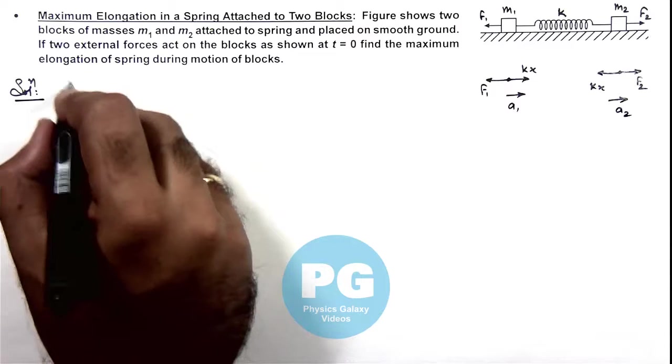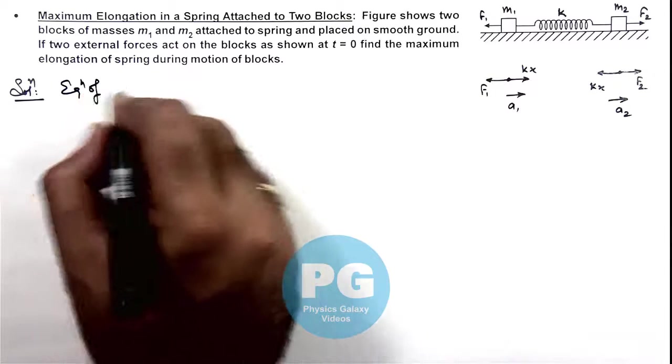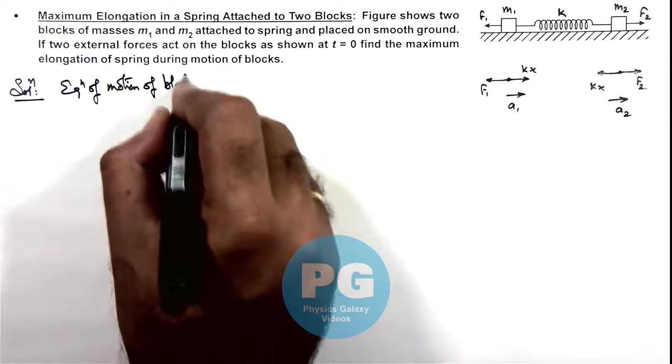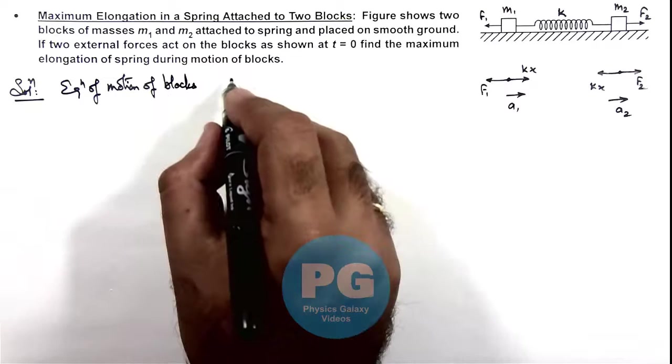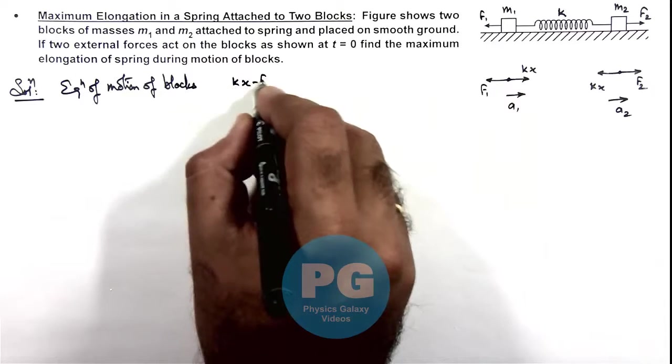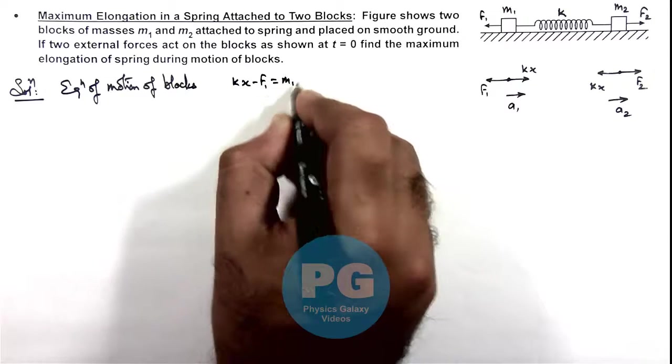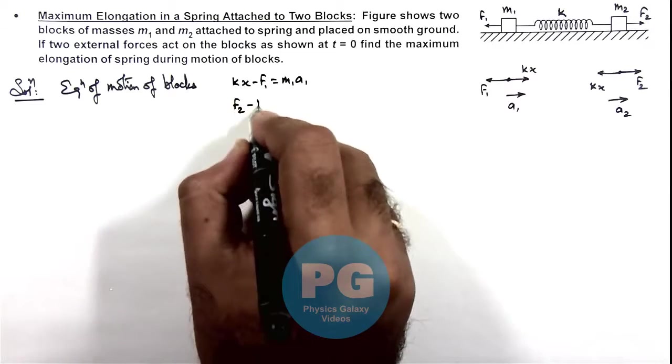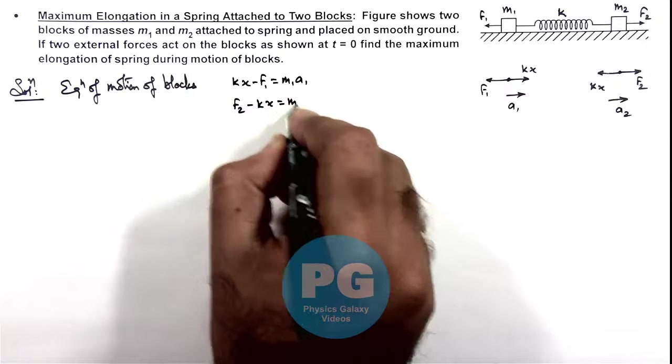So if we write equation of motions of blocks, here you can see for the two blocks we can write kx minus f₁ is equal to m₁a₁. And for the other we can write f₂ minus kx is equal to m₂a₂.